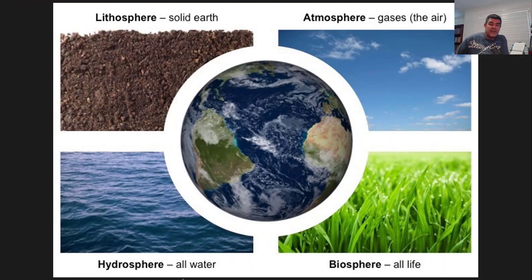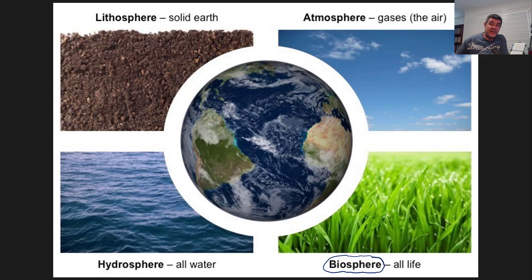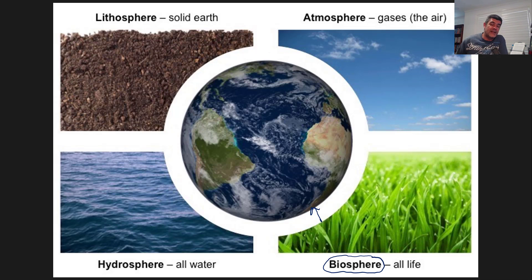The first thing we need to do is look at each of these spheres. I've added the biosphere here because it's going to be a very important part of our study of Earth and Environmental Science. The processes that occur in the biosphere affect each of those other three spheres in one or more ways, so we want to make sure we consider the biosphere as also having a very important impact on our planet.